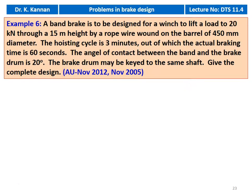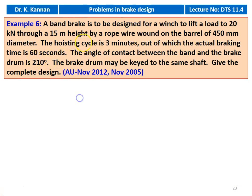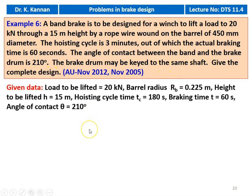Example number 6 from November 2012 and November 2005 question paper. A band brake is to be designed for a winch to lift a load of 20 kilo Newton through a 15 meter height by a rope wire wound around a barrel of 450 millimeter diameter. The hoisting cycle is 3 minutes, out of which the actual braking time is 60 seconds. The angle of contact between the band and the brake drum is 210 degrees. The given data: load to be lifted 20 kilo Newton, barrel radius R_b equal to 0.225 meters, height to be lifted H_c equal to 15 meters, hoist cycle time T_c equal to 180 seconds, braking time T equal to 60 seconds, and angle of contact theta equal to 210 degrees.